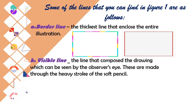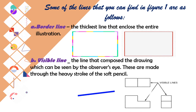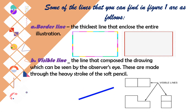We also have the visible line. A visible line is a line that composes the drawing which can be seen by the observer's eye. These are made through the heavy stroke of a soft pencil. From the word itself — visible — meaning it can be seen by our eyes.